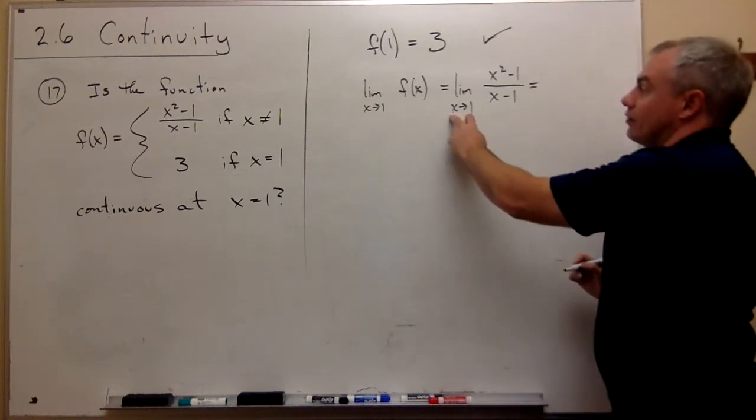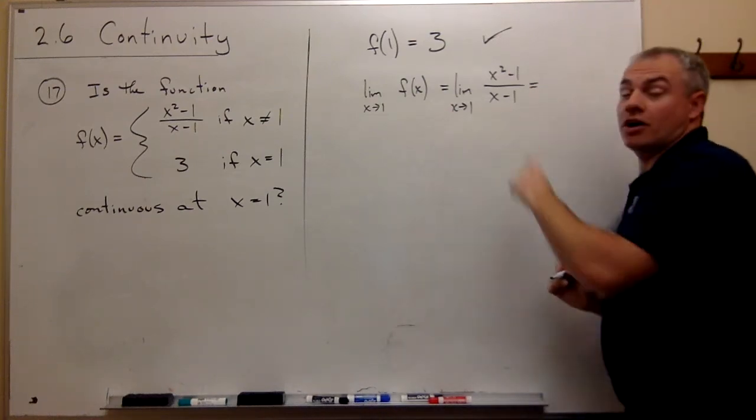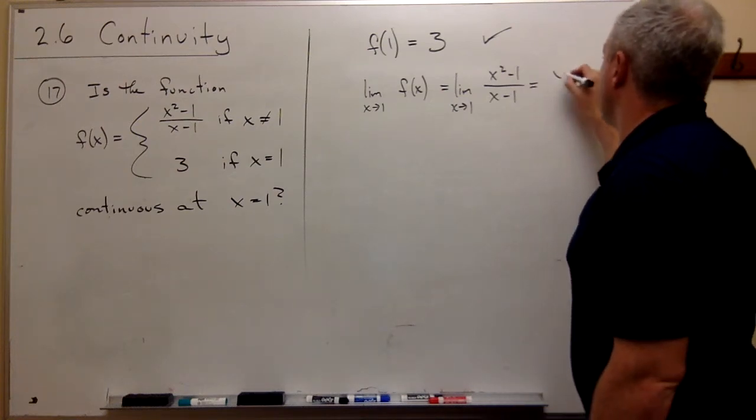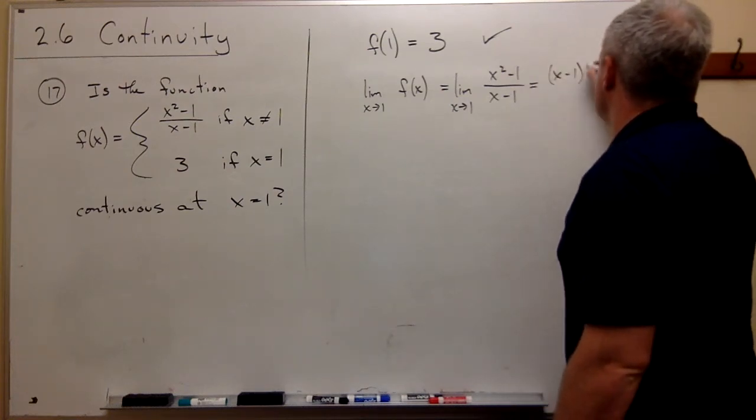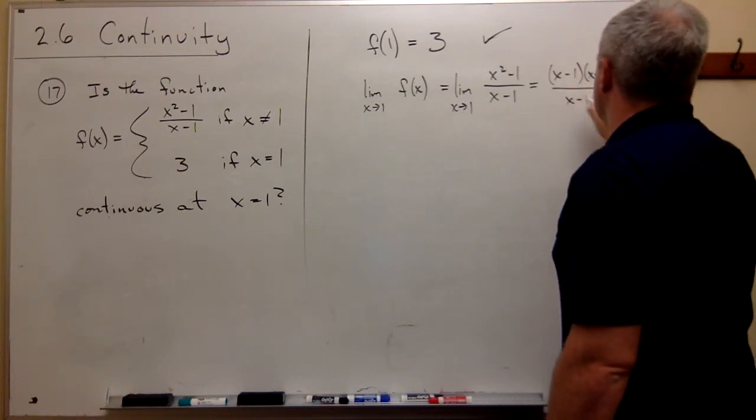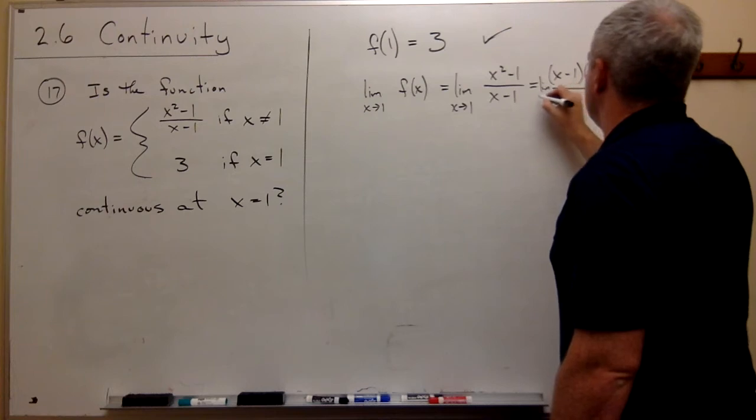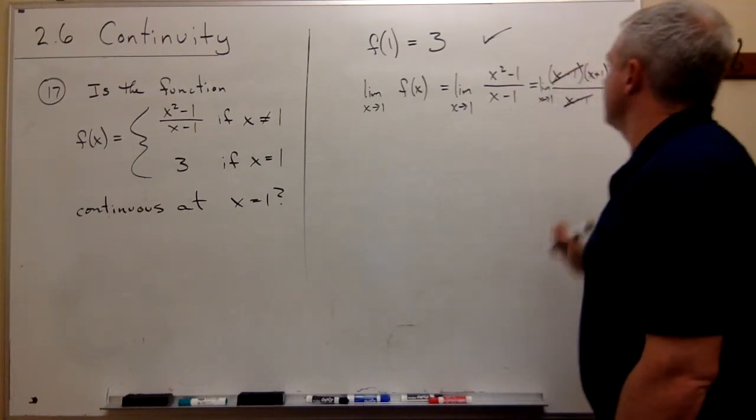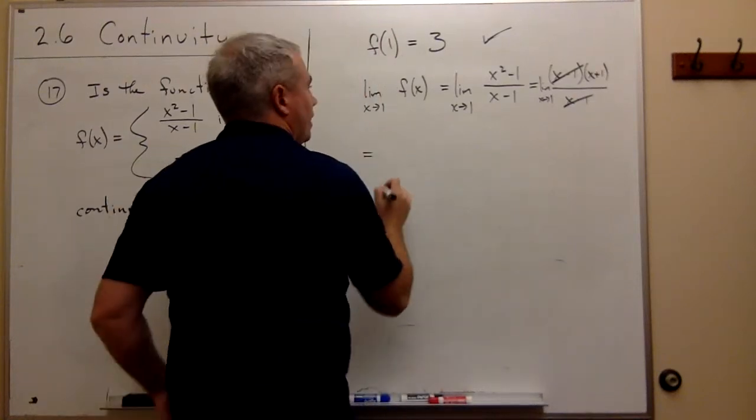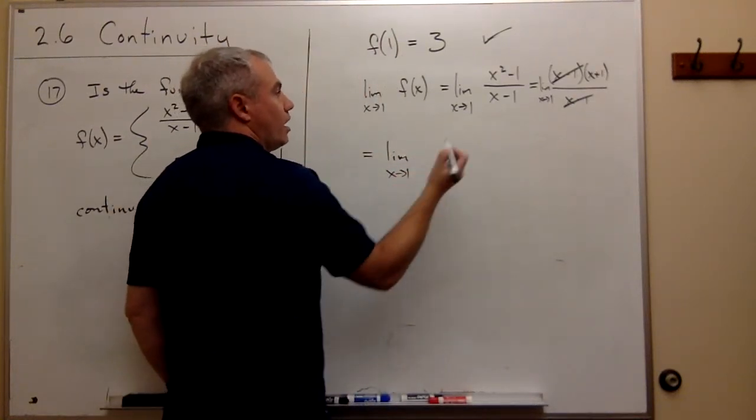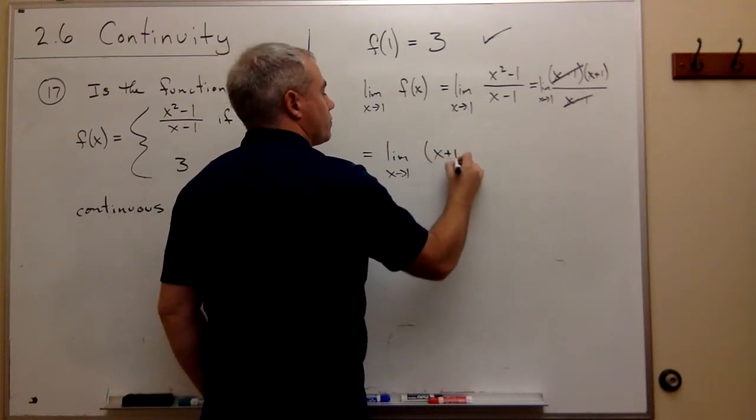I can't plug the 1 in right away because I get division by 0. So, I better factor the top. If I factor the top, I get x minus 1 times x plus 1 over x minus 1, still the limit as x goes to 1. The x minus 1s cancel, and I'm left with the limit as x goes to 1 of x plus 1.